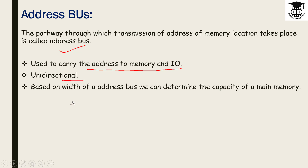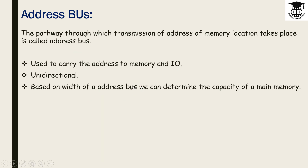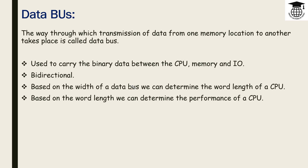The address bus is unidirectional, and based on the width of the address bus we can determine the capacity of main memory. The data bus is the pathway through which transmission of data from one memory location to another takes place, and it is used to carry binary data between the CPU, memory, and I/O devices.